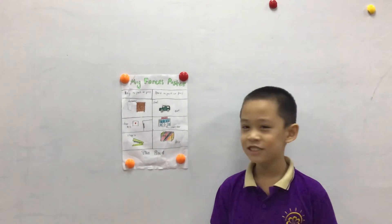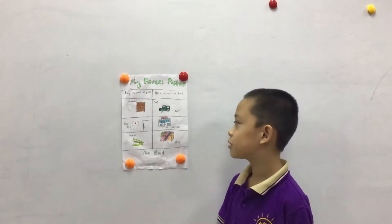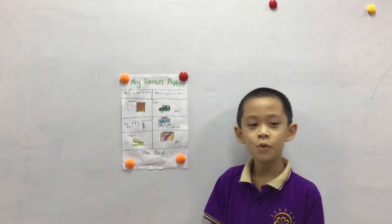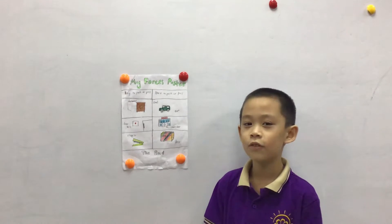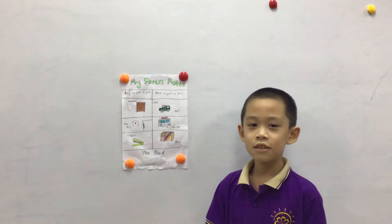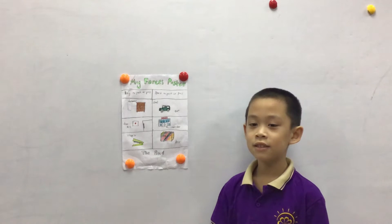Today I will tell you about my poster. The first thing that is easy to push or pull is the drawer. We push or pull it to get the things out of the drawer. It's easy to push or pull because it is light.